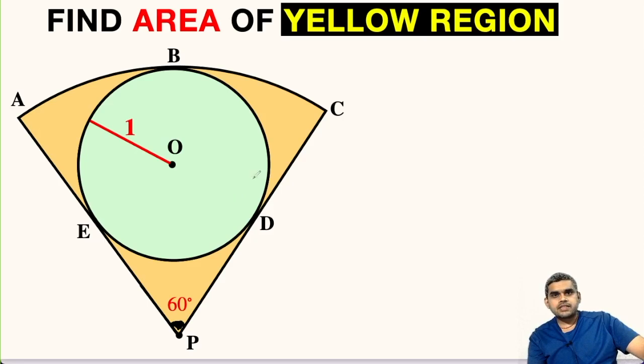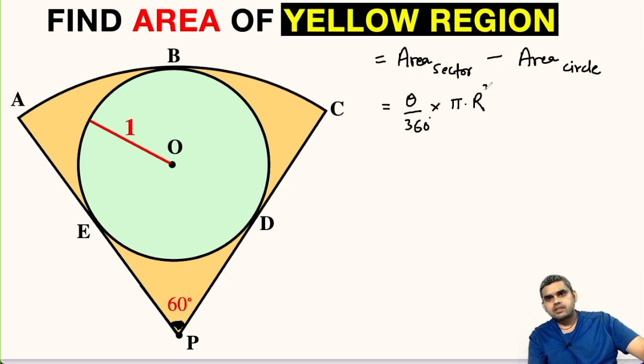Area of this shaded yellow part will be equal to area of the sector minus area of this small circle. Area of sector is given by the formula theta by 360 degree multiplied with pi times the square of the radius.